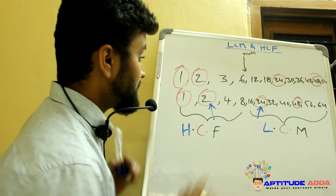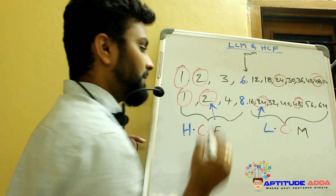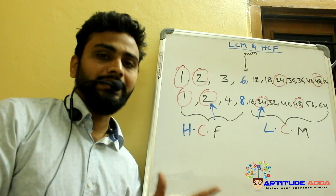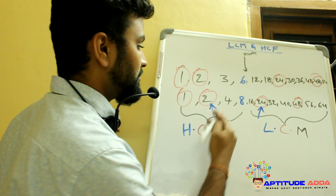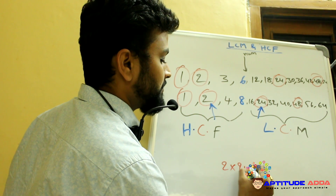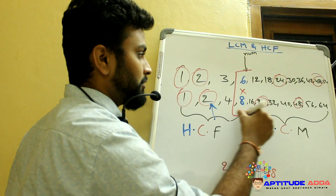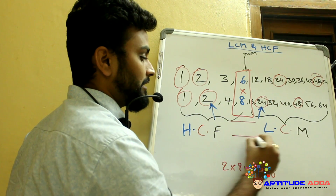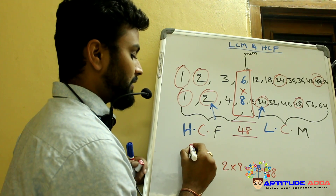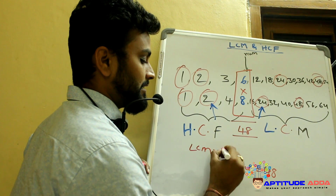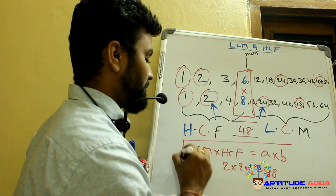Here, 6 and 8 are the numbers. If you observe one thing clearly — what is the product of LCM and HCF? 2 into 24 gives you 48. And of course, the product of the two numbers, 6 into 8, also gives 48 only. From this we can say: product of LCM and HCF gives you the product of the two numbers A and B.